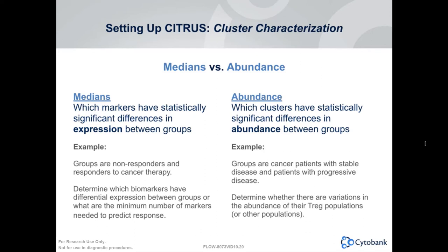After deciding which model to run with Citrus, you choose which feature to use. Features include either median expression of markers in your panel or abundance of certain subsets. You can choose one or another per Citrus run, but you can set up two runs to check both. When to use what depends on your study. If you hypothesize that there are biomarker expression level changes — such as PD-1 expression within responders versus non-responders — choose median expression. If you are looking at changes in frequency of certain cell types, like Tregs with different disease status, use abundance for identifying the frequency of subsets or clusters.